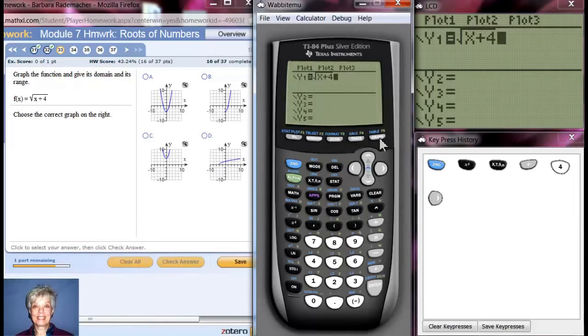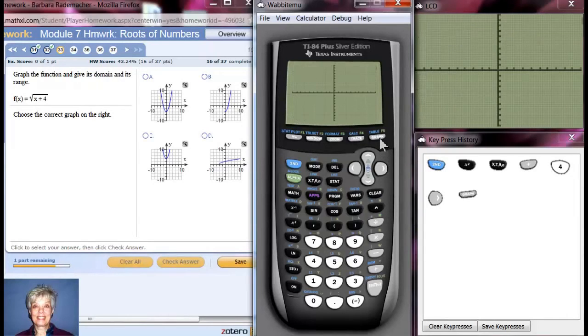Now I'm going to push the graph button. All square root graphs have this same general shape. They move around depending on the equation, but they all have that shape.